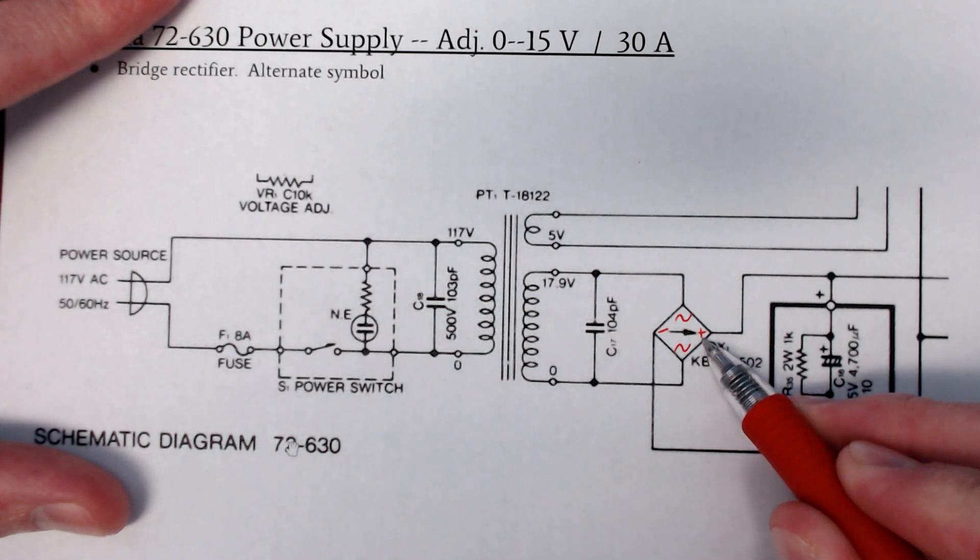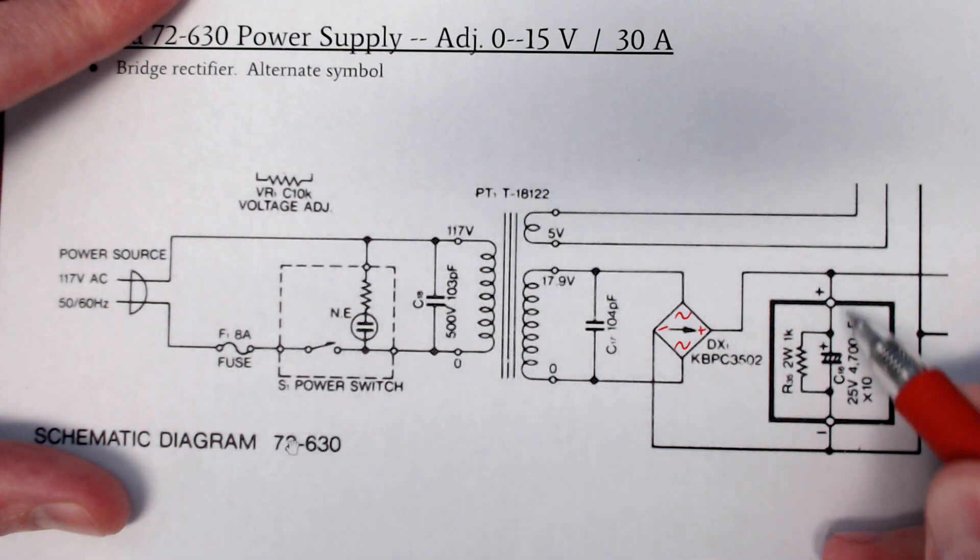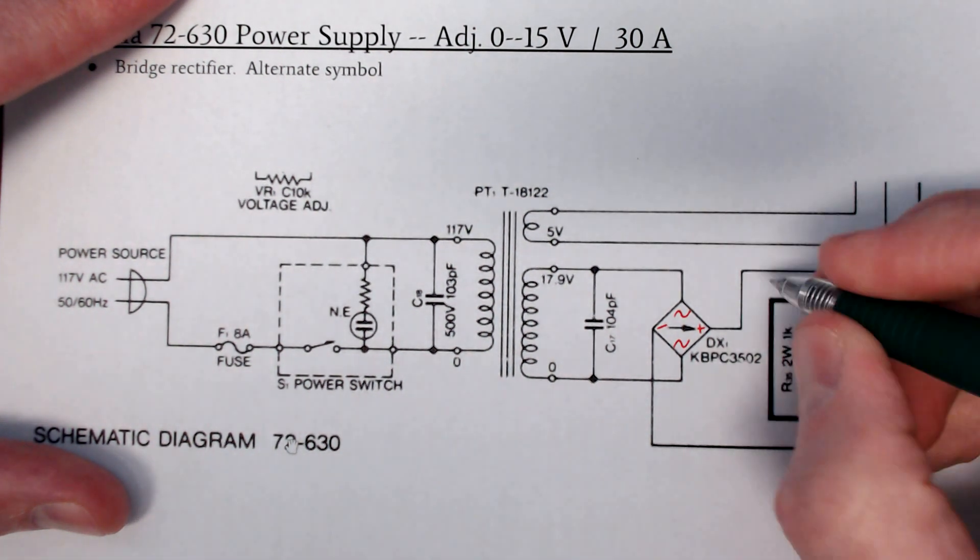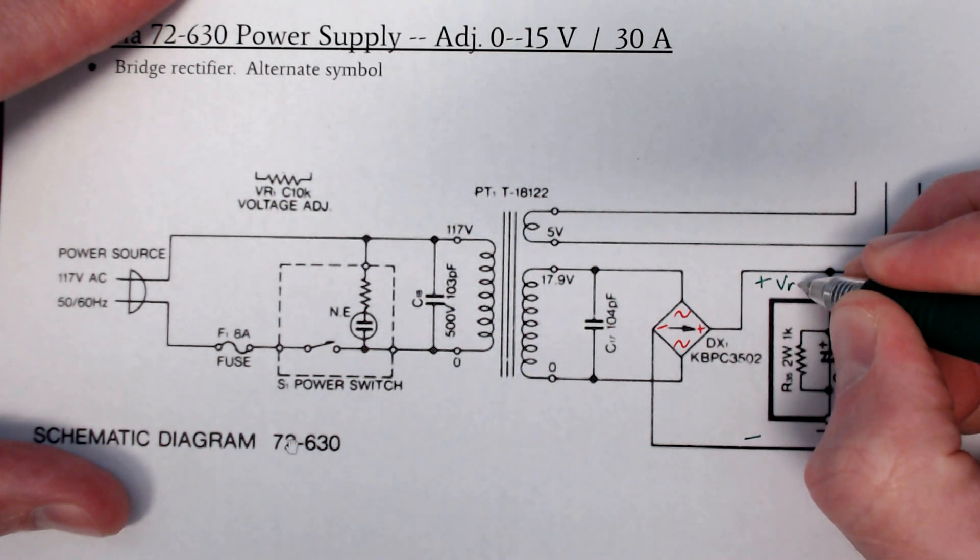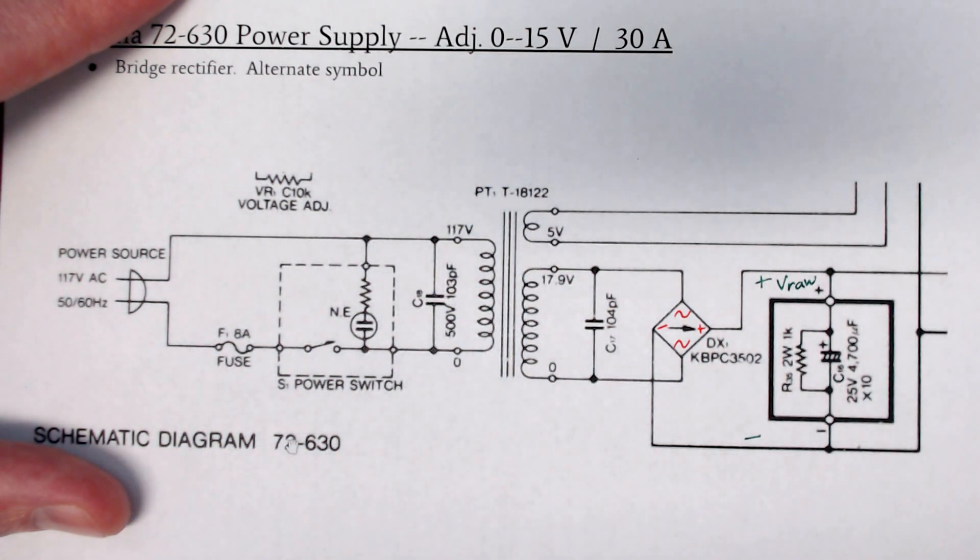We also can infer what side is the plus and the minus by how the capacitor is over here. So in the terminology we've been using, this is VRAW, the raw output of this power supply.